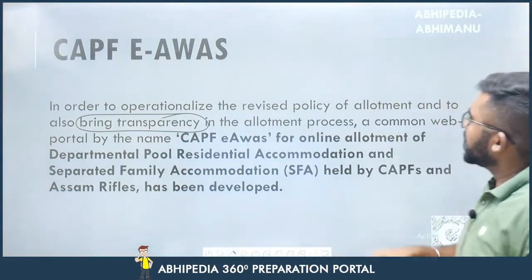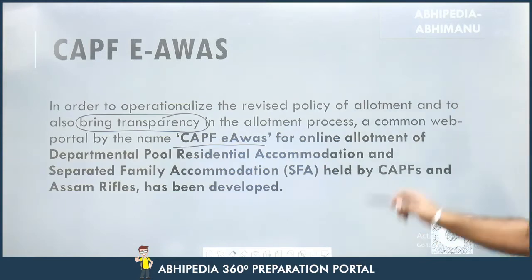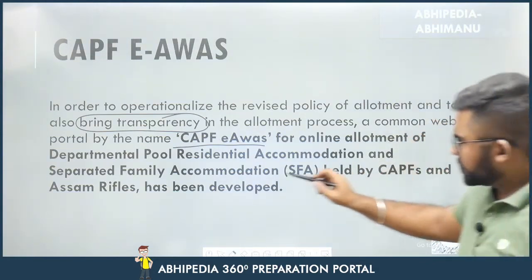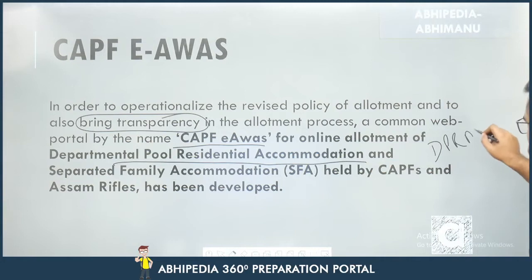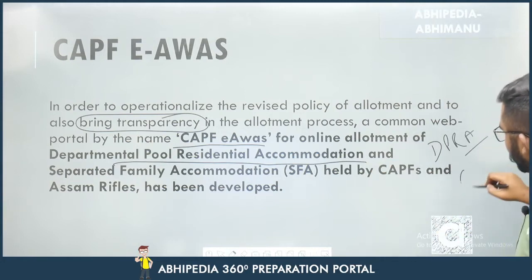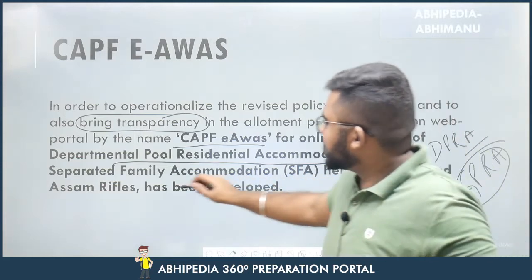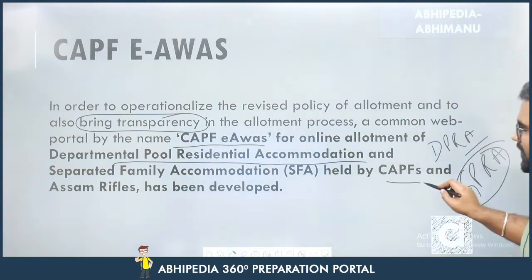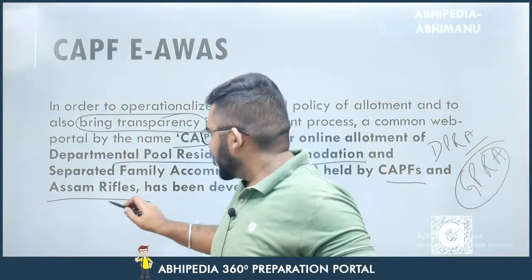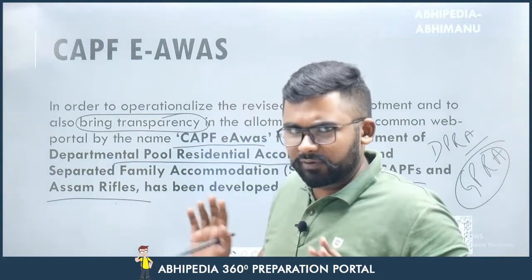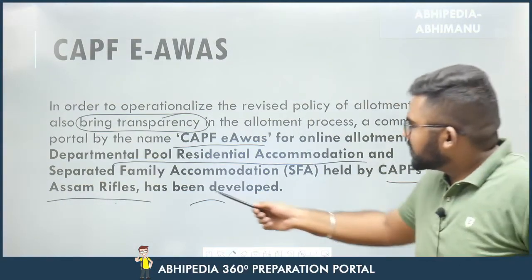There is enhanced transparency in the allotment process. A common web portal by the name CAPF e-Awas has been created for online allotment of Departmental Pool Residential Accommodation, known as DPRA. Within e-Sampada, there is GPRA — General Pool Residential Accommodation. So DPRA and GPRA are slightly different, which we will clarify towards the end of the video.